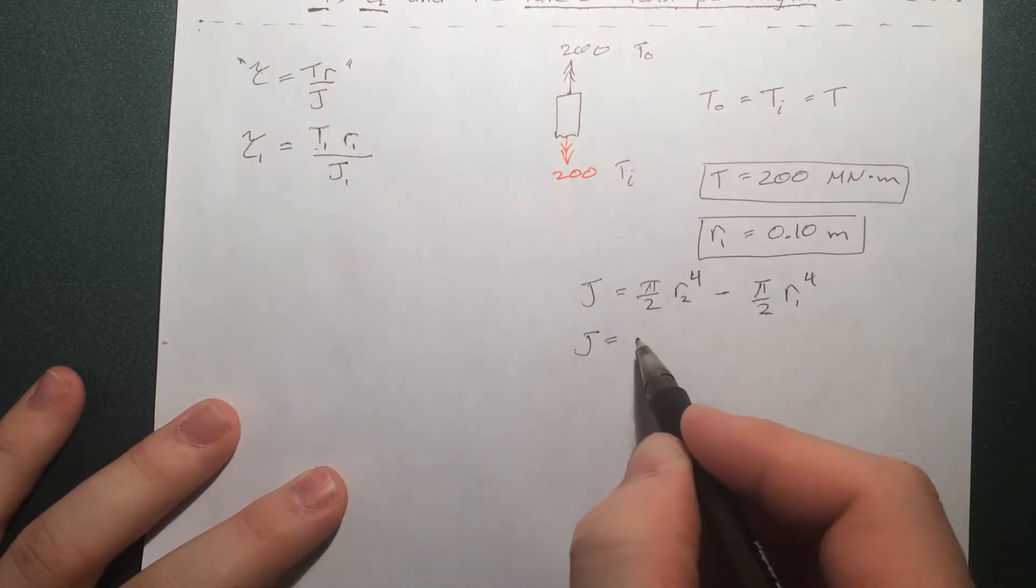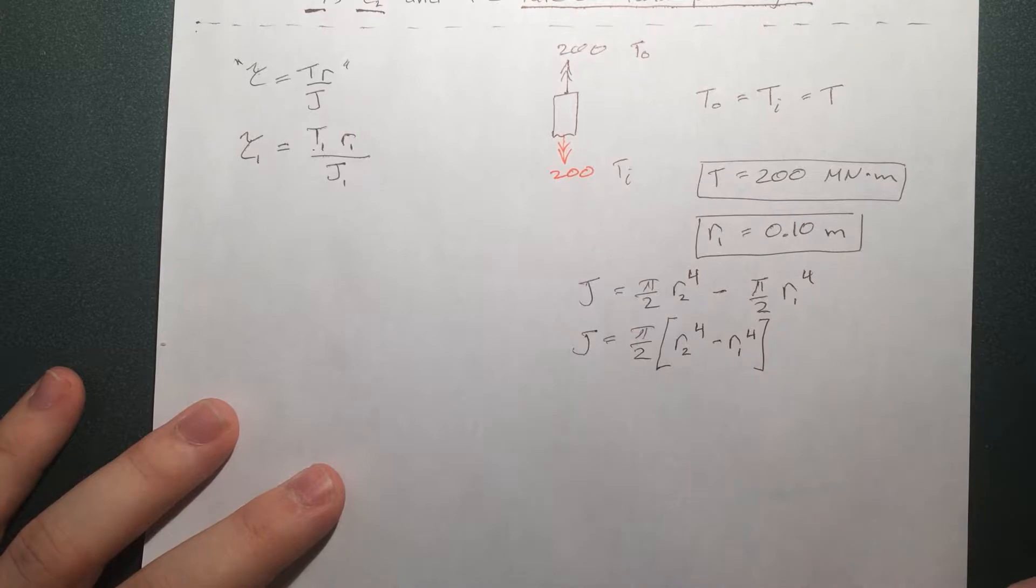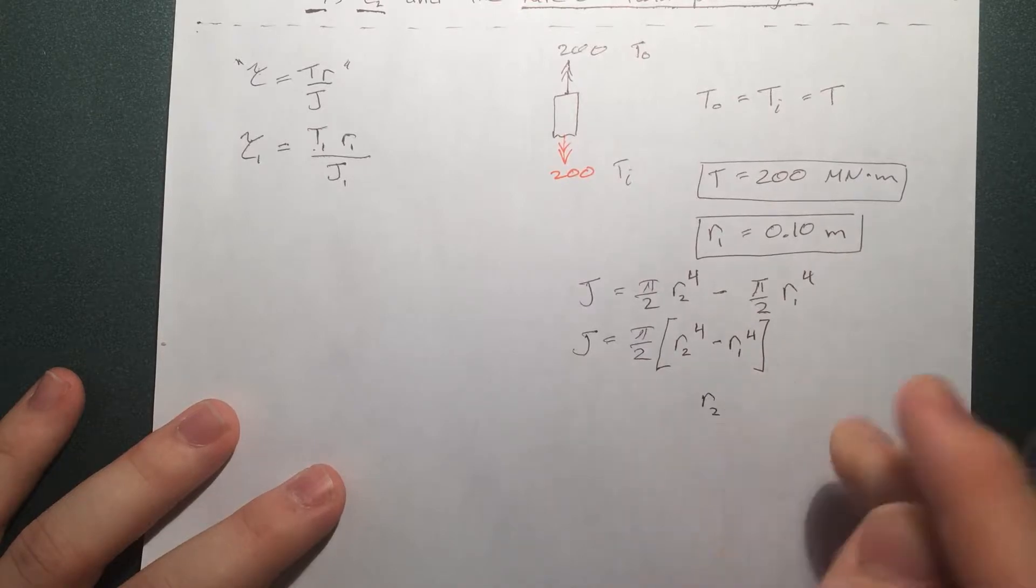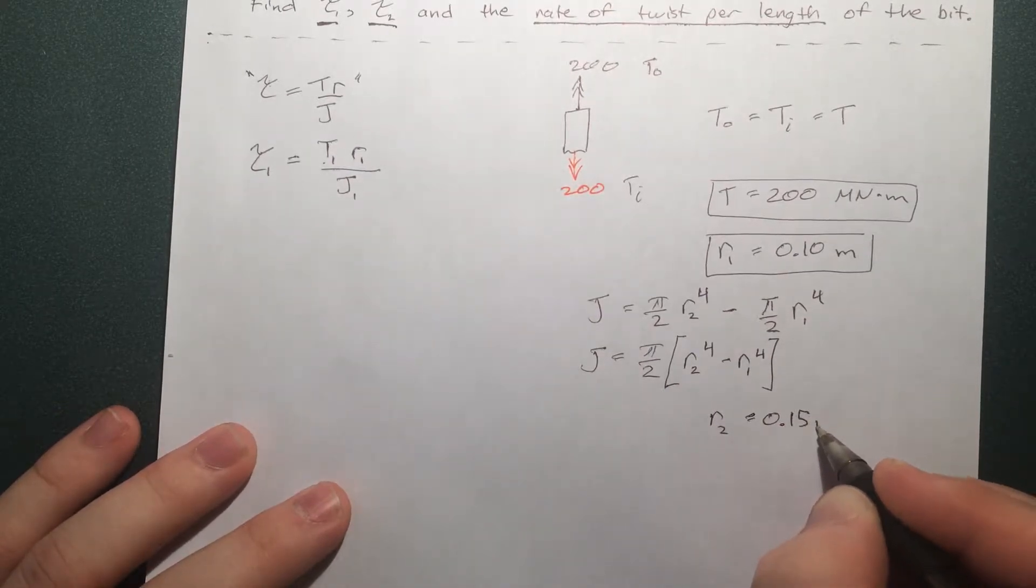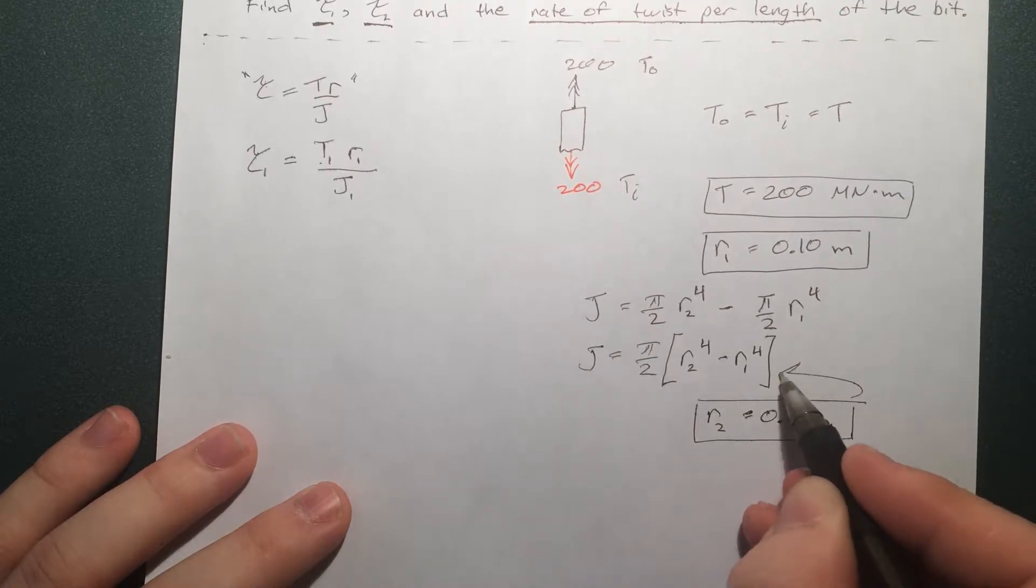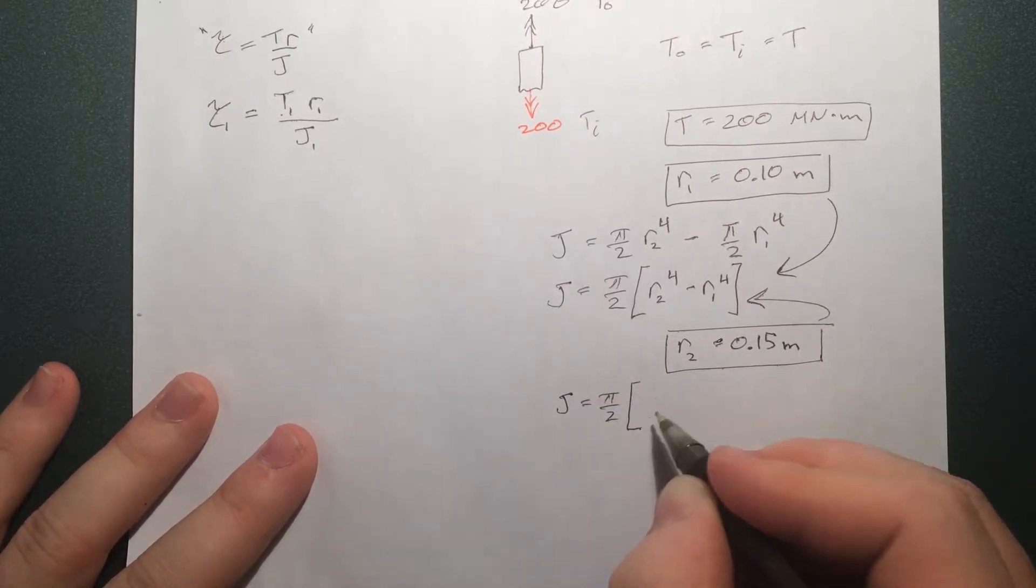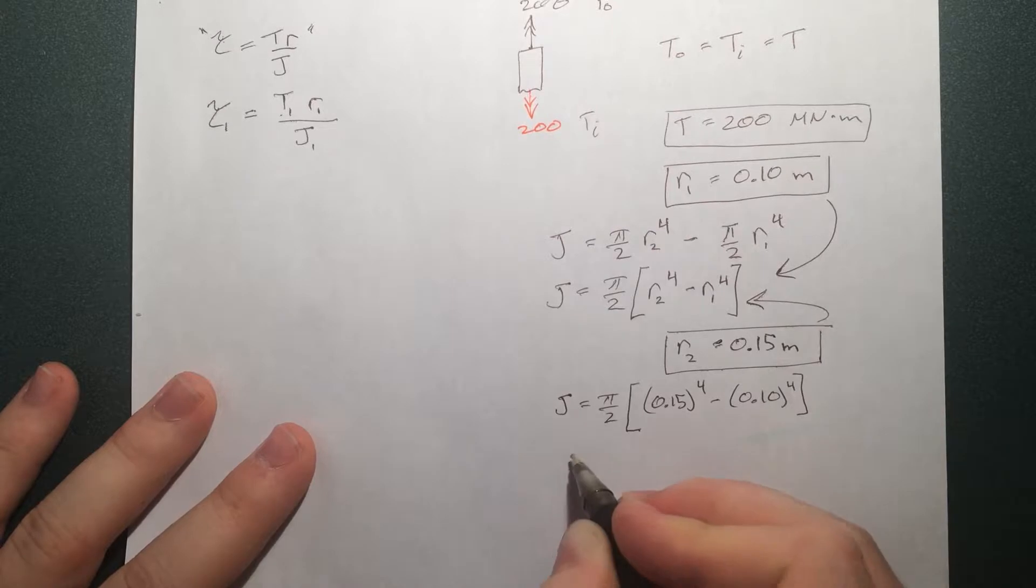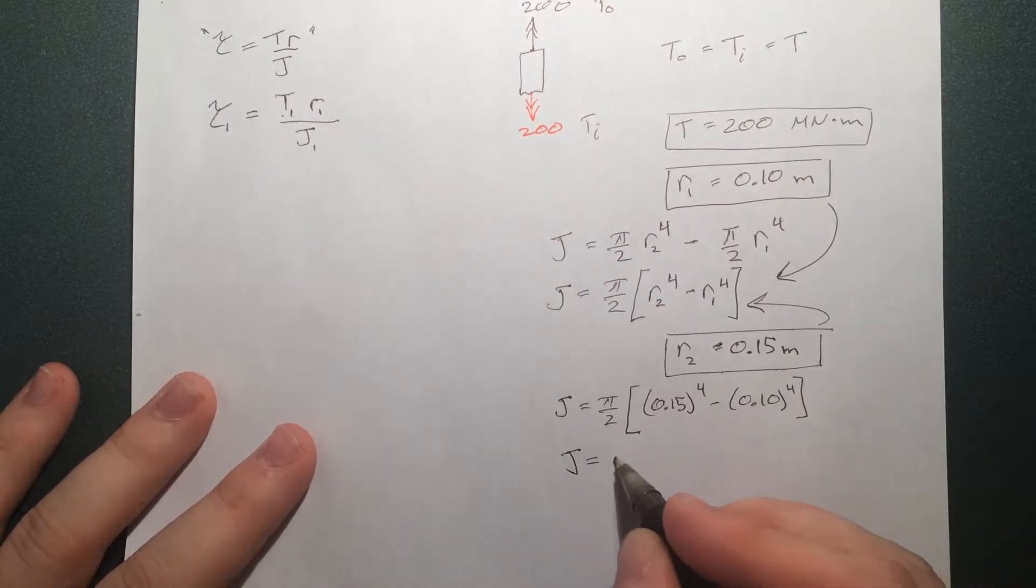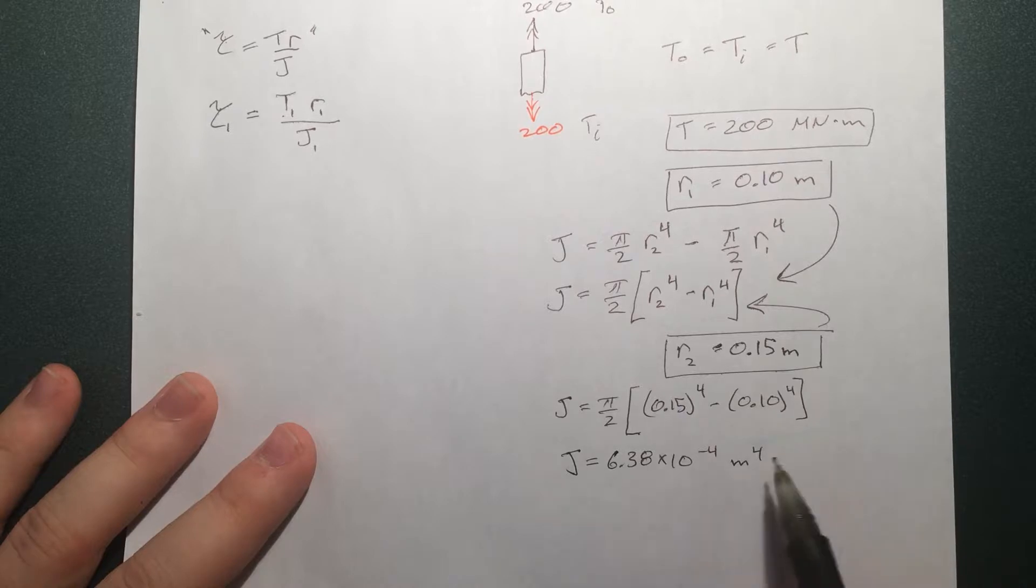And we can simply rewrite this as [equation shown]. And then plugging in our radius values, so the radius for 2 - that's going to be half of 30, 15 centimeters. That's 0.15 meters. And then going ahead, plugging these two into here, we get this. So this is our J.